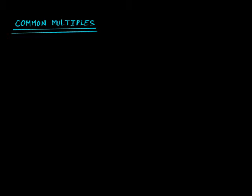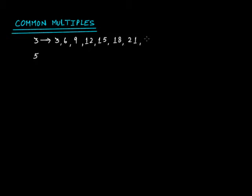Let's take an example: suppose you have number 3 and number 5. If you write the first ten multiples of 3, they are: 3, 6, 9, 12, 15, 18, 21, 24, 27, and 30. So these are the first ten multiples of 3.